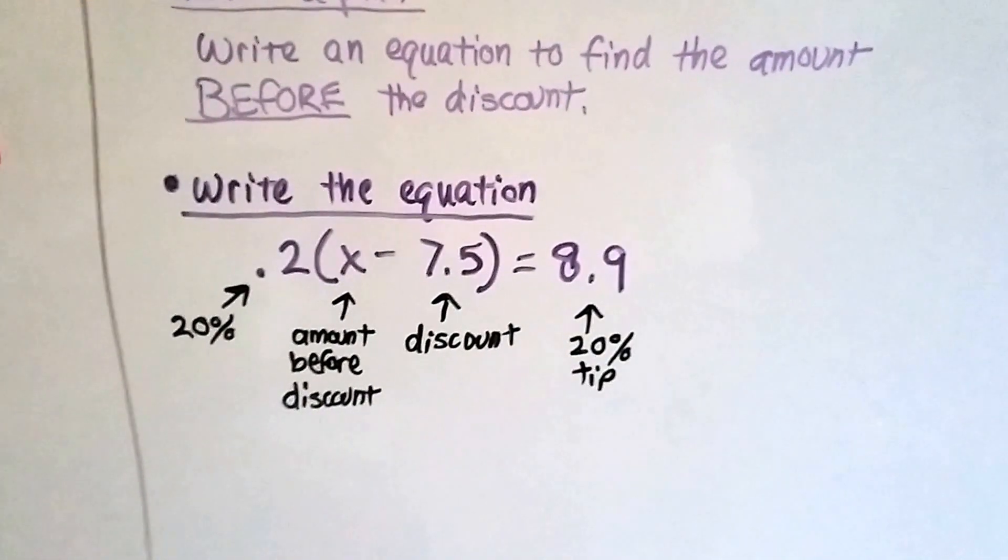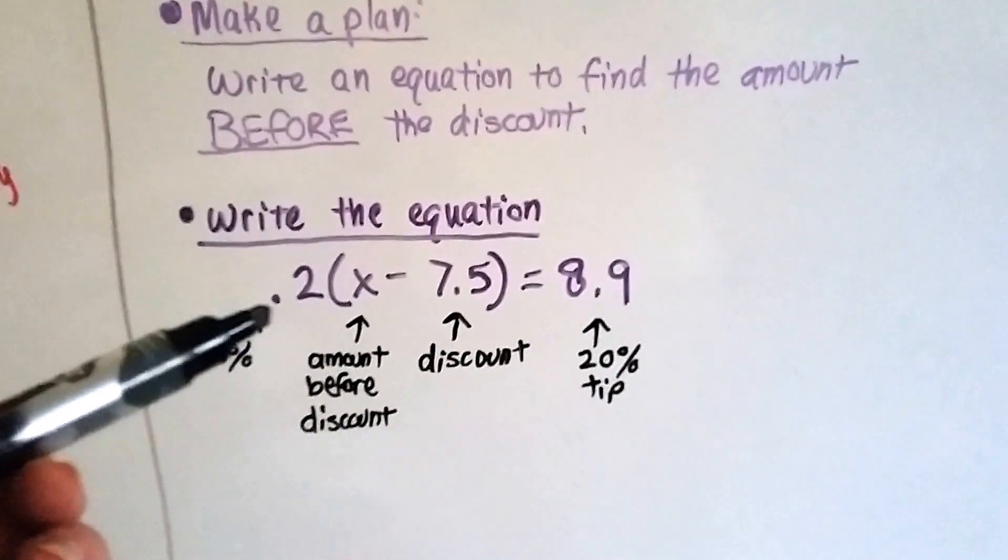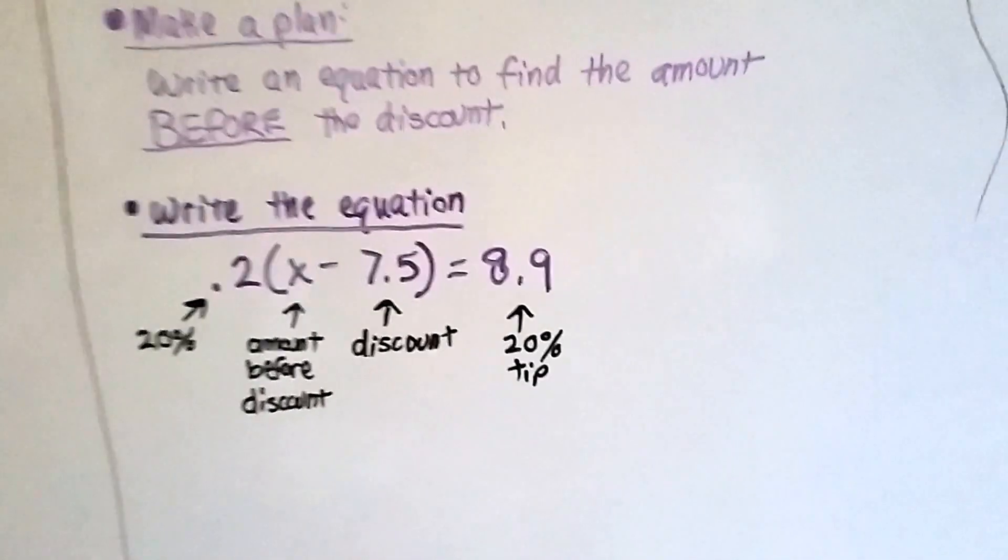That's the 20% tip. We don't need the zero after that either. So now we've got our equation. 0.2, X minus 7.5 in parentheses, equals 8.9. Now we can just simplify it and solve it. So the first thing we do is we're going to use the distributive property to solve it.